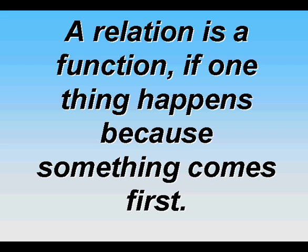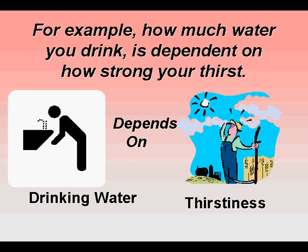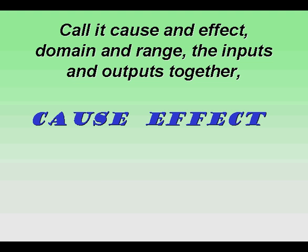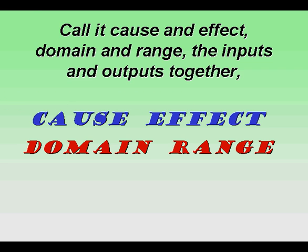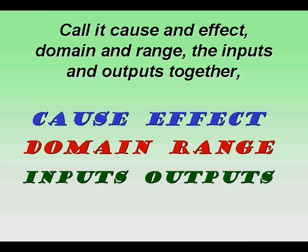A relation is a function if one thing happens because something comes first. For example, how much water you drink is dependent on how strong your thirst. Call it cause and effect, domain and range, the inputs and outputs together.